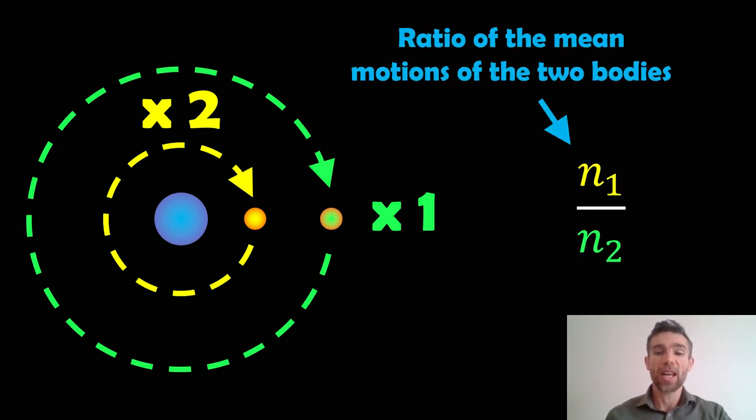n1 might be the inner one, n2 might be the outer one, and it's just the ratio. The inner one goes around twice and the outer one goes around once.